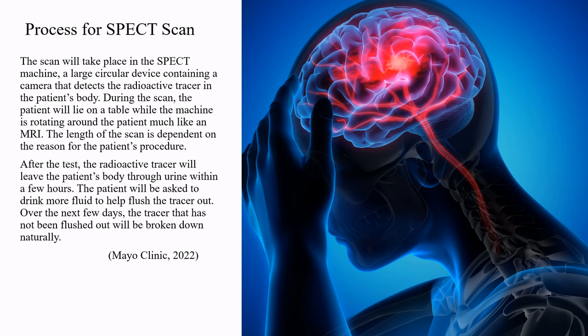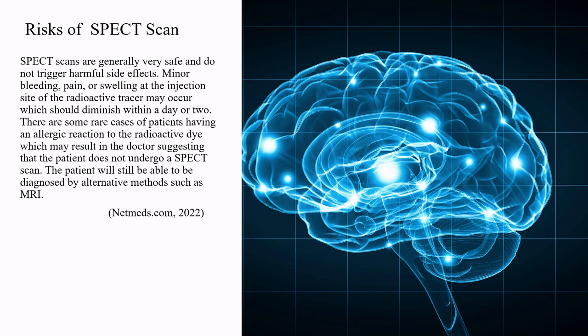After the test, the radioactive tracer will leave the patient's body through urine within a few hours, and the patient will be asked to drink more fluid to help flush the tracer out. Over the next few days, any remaining tracer will be broken down naturally. SPECT scans are generally very safe. Minor bleeding, pain, or swelling at the injection site may occur and should diminish within a day or two. In rare cases, patients may have an allergic reaction to the radioactive dye, and the doctor may suggest alternative methods such as an MRI.